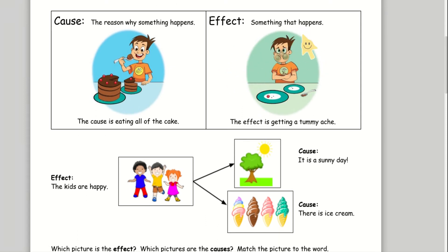In this picture, the effect or something that happened is the boy getting a tummy ache. Cause is the reason why. So if we ask why did the boy get a tummy ache, we are asking about the cause. The cause was eating too much cake.